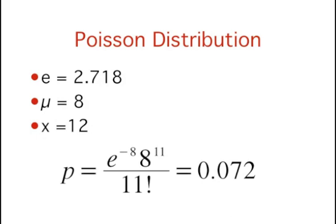For this example, the mean is 8 and the number of successes is 12. The probability of exactly 12 successes is 0.072.